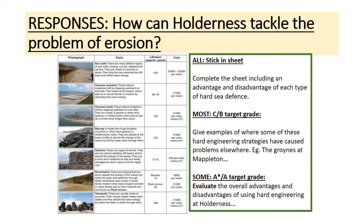For example, the sea wall: one advantage would be that it has a long lifespan of 100 years, so once it's built it lasts for ages and is really effective at stopping the sea from reaching the cliff. But a disadvantage might be that they look unattractive and some local residents wouldn't like the appearance - they ruin the natural landscape. Also, they're very expensive, one of the most expensive forms of coastal management. Do that process for each of those sea defences, and you can do a bit of research - BBC Bitesize is quite good for that.